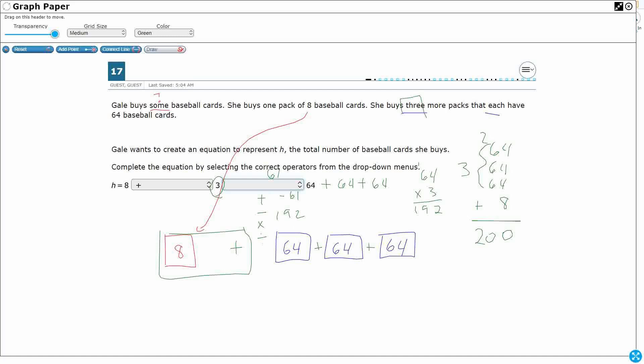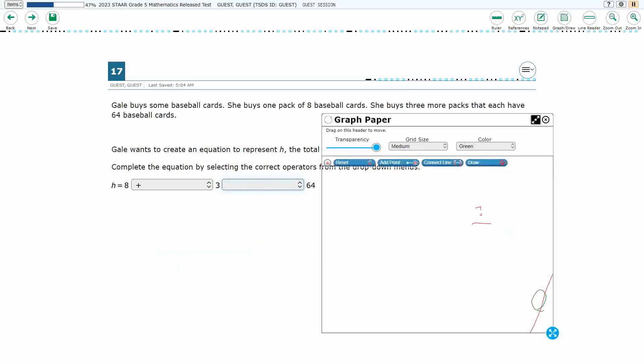And then three divided by 64 is going to give me some really small decimal. All right, so I'm looking at this multiplication. Let's see if we can double-check our work.